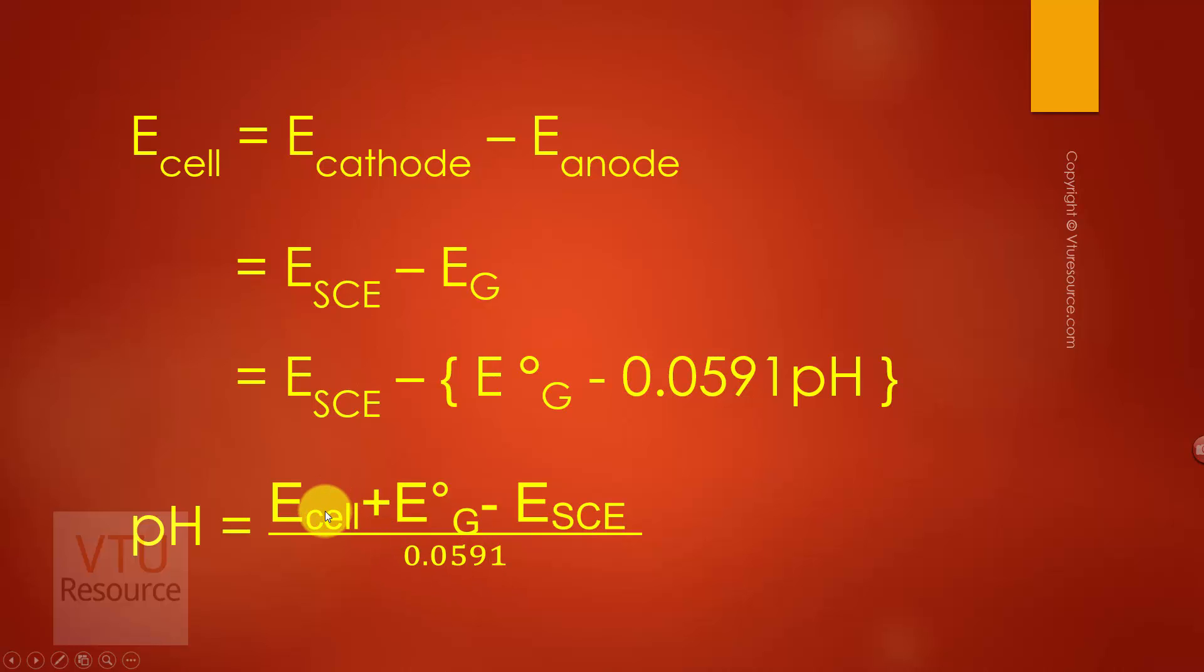E cell is determined and known. E°G is constant, and E saturated calomel electrode is also constant. By substituting all these values, the pH of an unknown solution is determined.